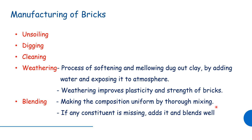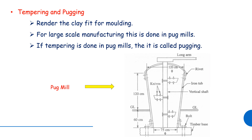Blending is the process of making the composition uniform by thorough mixing. The process of blending is done over a few days. Tempering is a vigorous mixing process done in 30 stages. Tempering is used for large-scale manufacturing.